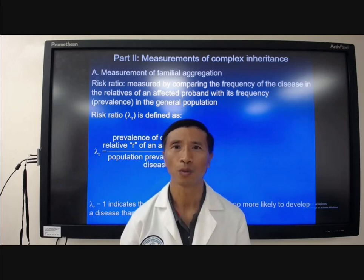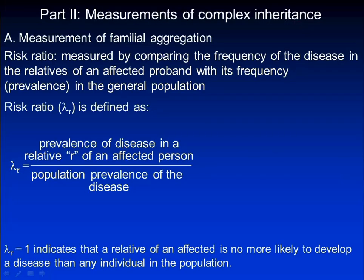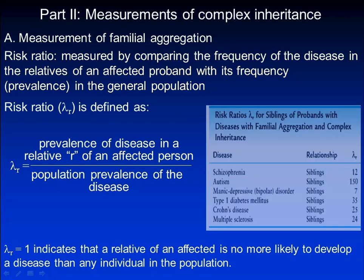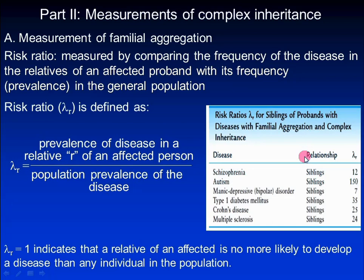Now let's move to part two: measurement of complex inheritance. First we will look at measurement of familial aggregation. Here we use risk ratio, measured by comparing the frequency of disease in the relatives of an affected proband with the frequency in the general population. Risk ratio is defined as prevalence of disease in the relative of an affected person divided by population prevalence of the disease. Here are risk ratios for some common disorders — they all have lambda-r greater than one, indicating they have familial aggregation.